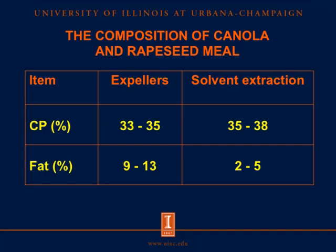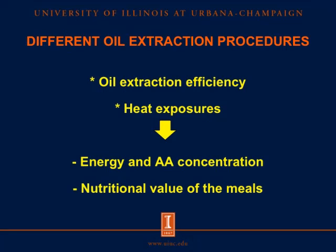For chemical composition, meal from the expeller procedure contains crude protein ranging from 33 to 35 percent and fat ranging from 9 to 13 percent. Meal from solvent extraction contains crude protein ranging from 35 to 38 percent and fat ranging from 2 to 5 percent. These differences in oil extraction efficiency and heat exposure between expeller and solvent extraction procedures could affect energy and amino acid concentration in the meal, and consequently affect its nutritional values.